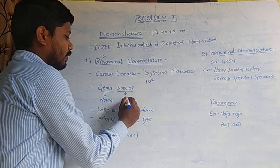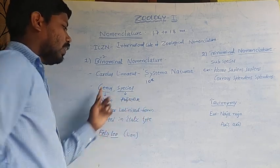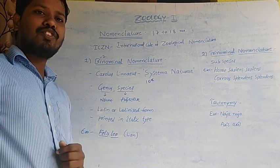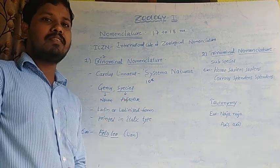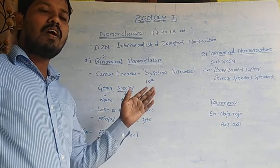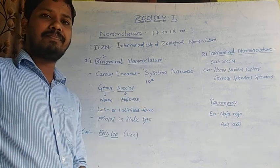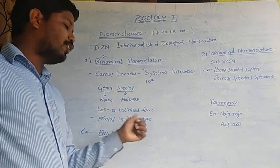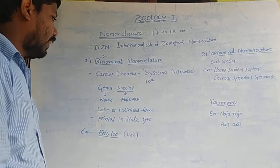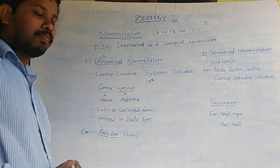Genus is a noun and species is an adjective. The generic name starts with a capital letter and the specific name starts with a small letter. All scientific names are in Latin or Latinized forms and are printed in italic type.